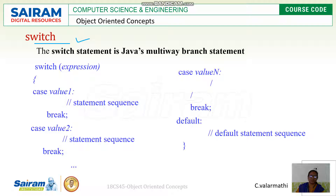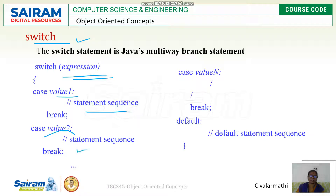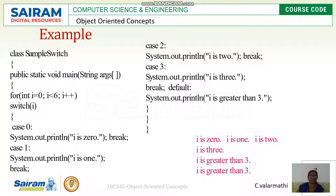The switch statement uses an expression, and based on its value, case value one executes a set of statements followed by a break statement. Similarly, case value two has another set of statements with a break. At the end of each case, a break is placed. The default keyword handles when no case value matches the expression.